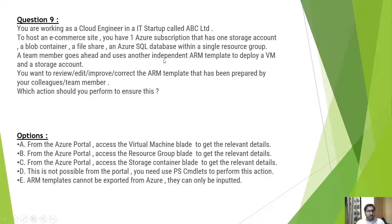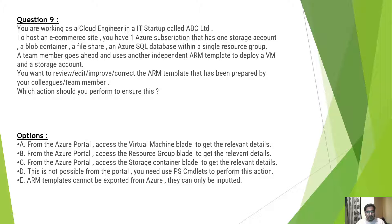A team member goes ahead and uses another independent ARM template to deploy a VM and a storage account. So we already had existing resources, and now we are deploying another VM. You want to review, edit, improve, or correct this ARM template prepared by your colleague. What action should you perform to ensure this? Basically, on top of the existing resources, two new resources have been added using an ARM template, and I want to check that specific ARM template created by my colleague.